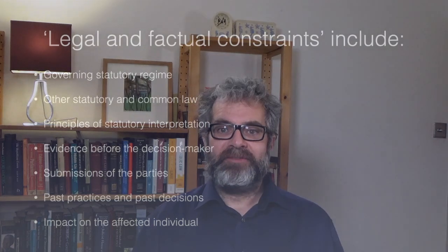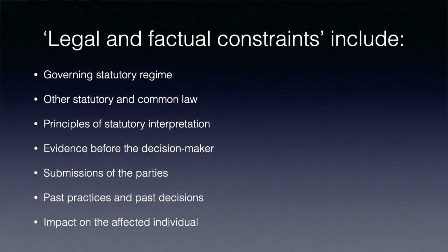The second aspect the majority considers as part of a reasonable decision is that it should be justifiable in terms of the legal and factual constraints on the decision. The court cites a non-exhaustive list of eight elements which will generally be relevant in evaluating whether a decision is reasonable. You will find them at paragraphs 108 to 135 of Vavilov. These are: the governing statutory scheme; other statutory or common law; principles of interpretation; evidence before the decision maker; submissions of the parties; past practices and decisions; and finally the impact of the decision on the affected individual.